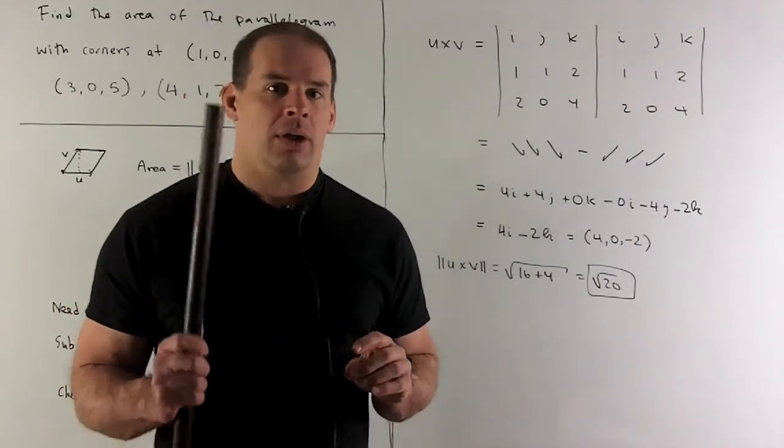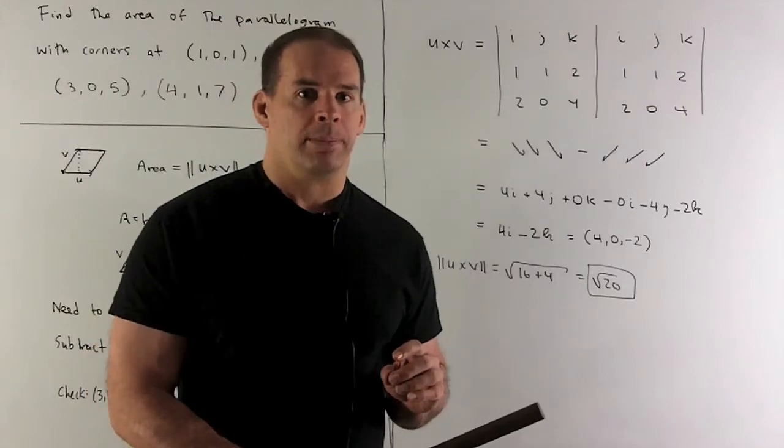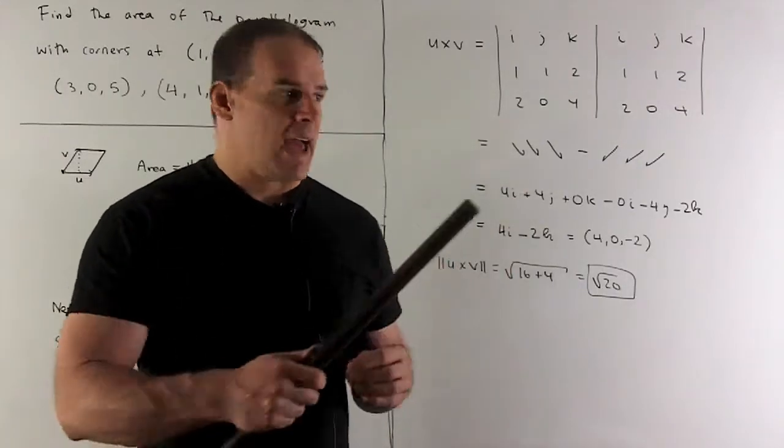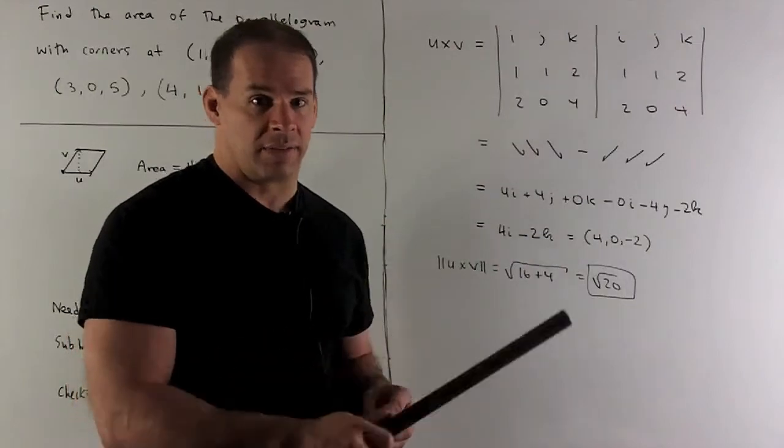And then it's going to be, go down three diagonals, multiplying. Come back three diagonals to the left, multiplying, and then take the difference.